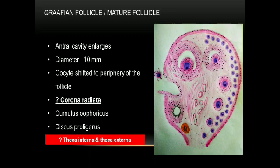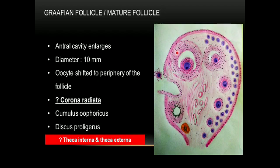The surrounding stromal cells differentiate into two layers: theca interna and theca externa. The theca interna consists of highly vascular cells that perform an endocrine function by secreting certain hormones. The theca externa, located further outward, contains smooth muscles and collagen fibers.